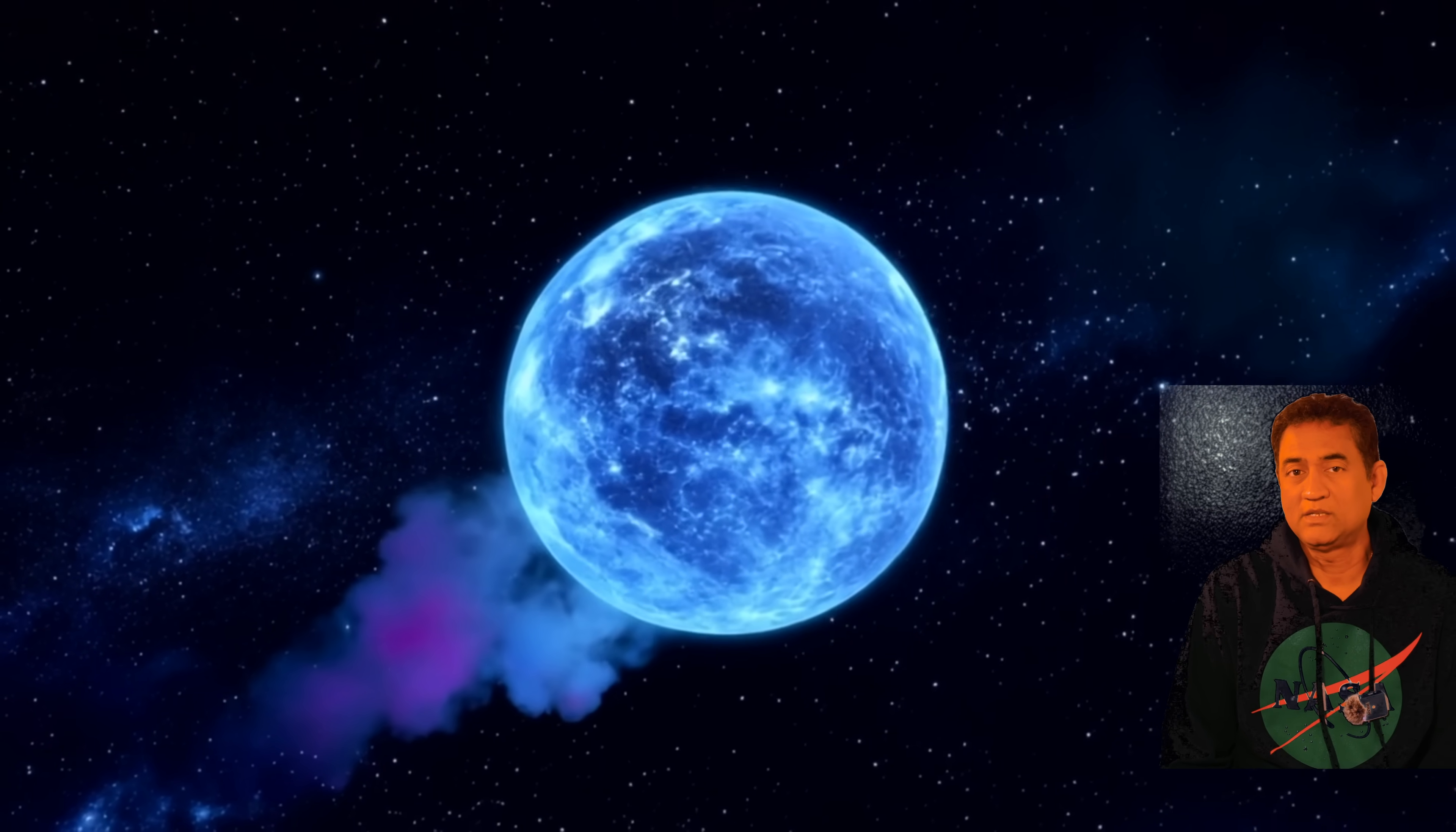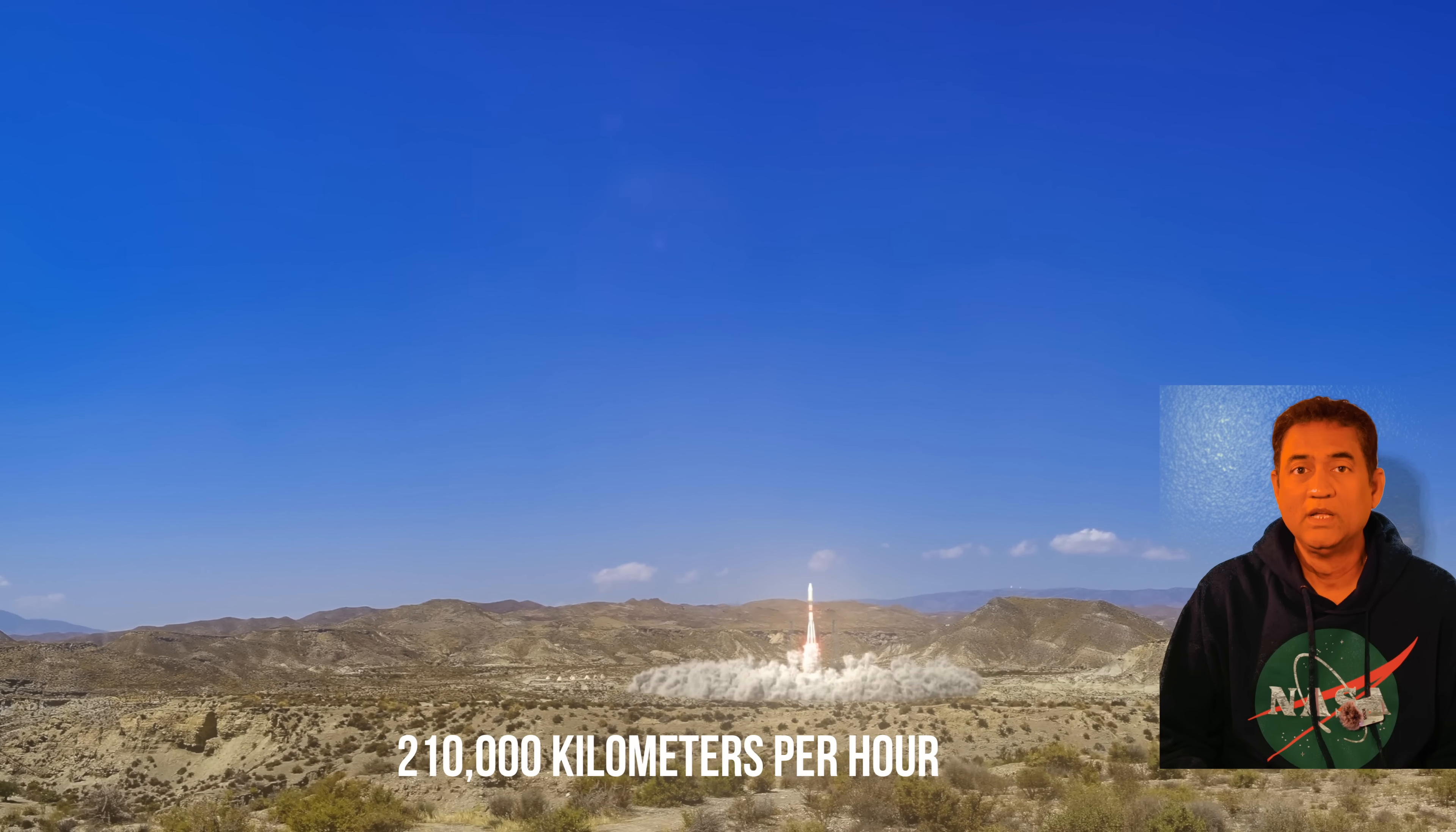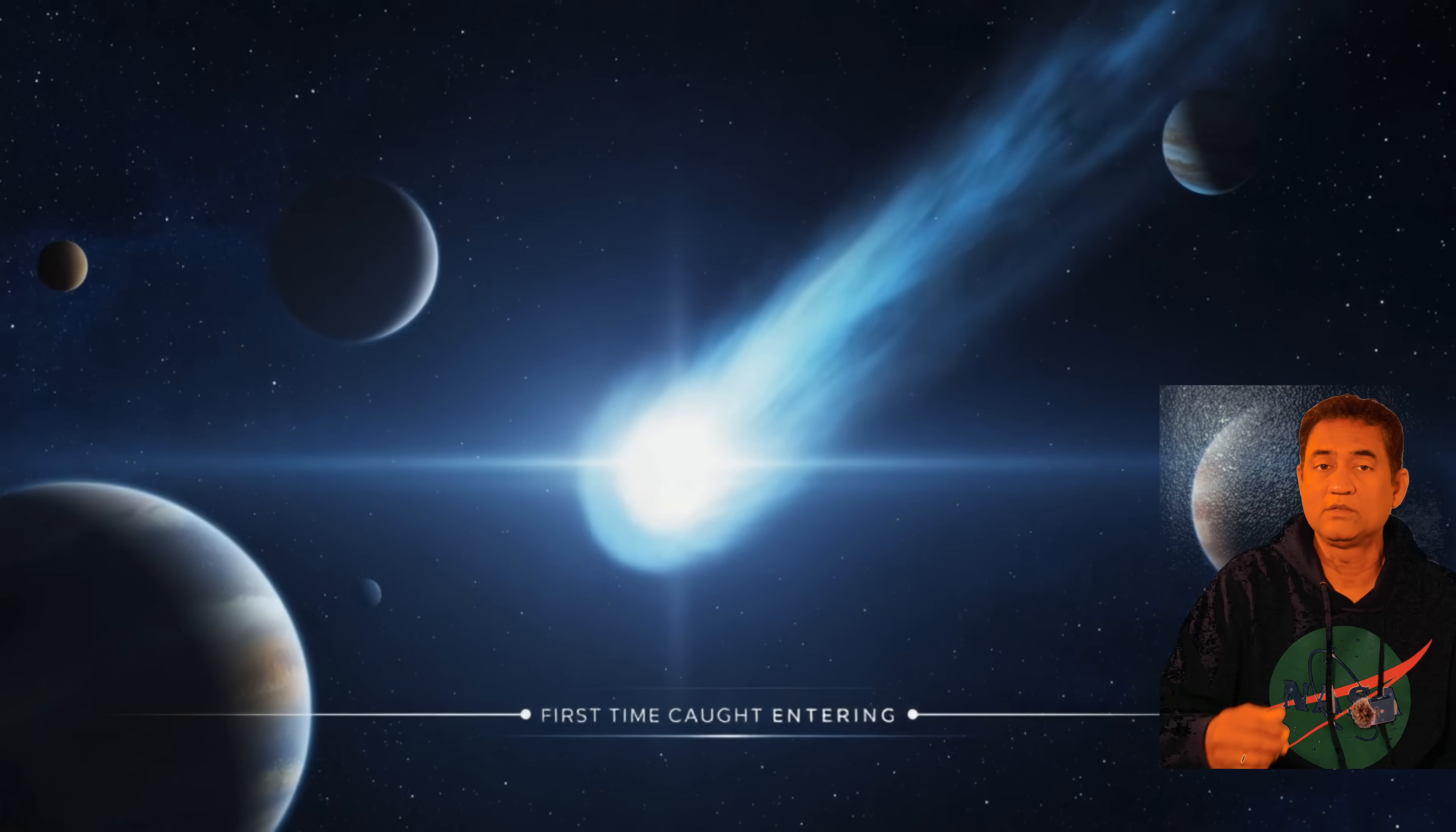A massive interstellar comet named 3I/Atlas is racing through our solar system. It's traveling about 210,000 kilometers per hour, nearly 60 times faster than the speed you need to break free from Earth's gravity. Unlike 1I/Oumuamua, we spotted this comet when it was entering the solar system.